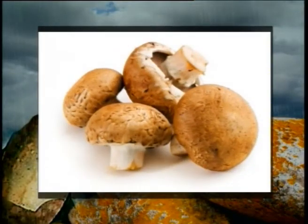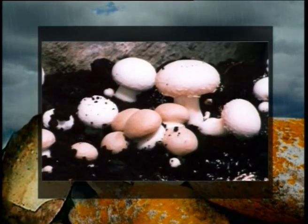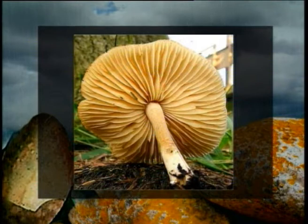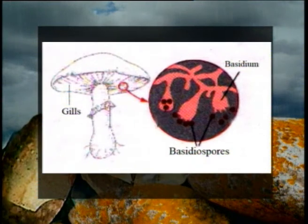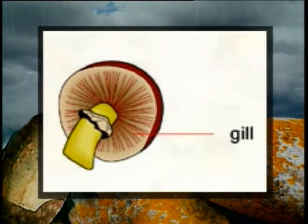The upper convex surface of the pileus can be smooth or somewhat hairy and white, yellow, or light brown in color. The underside of the pileus usually contains about 300 to 600 radially arranged plate-like structures hanging downwards known as gills, which contain terminal club-shaped spore-producing structures called basidia. These gills vary in color and are initially pink, turning dark brown at maturity.